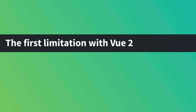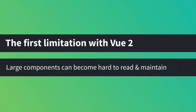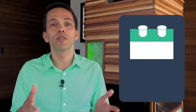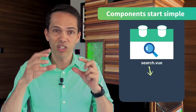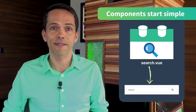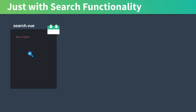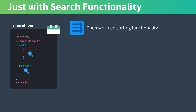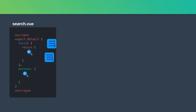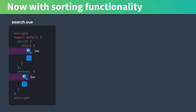Let's dive into the first limitation: large components may be hard to read and maintain. Let's imagine we're creating a simple search component — a search bar. Using the regular component syntax we would create a dot vue file which might have a data option with reactive properties and our methods for our search logic. Once complete we realize we need some sorting functionality, so we write up the code which also has some reactive properties and some methods.